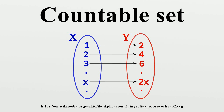A set S is countable if there exists an injective function F from S to the natural numbers N = {0, 1, 2, 3, ...}. If such an F can be found that is also surjective, then S is called countably infinite. In other words, a set is countably infinite if it has a one-to-one correspondence with the natural number set. Some authors use countable to mean countably infinite and do not include finite sets. Alternative formulations in terms of a bijective or surjective function can also be given.